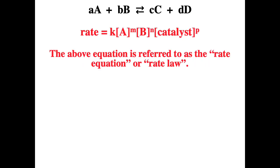Consider this made-up reaction: aA + bB → cC + dD, where lowercase letters are the coefficients and uppercase letters are the compounds. Immediately when given a reaction, we can write down a rate equation: rate equals K times the concentrations of the reactants to some power. These exponents have to be determined experimentally. If you have a catalyst, you also include that in your rate equation with its own exponent. This is referred to as the rate equation or the rate law.